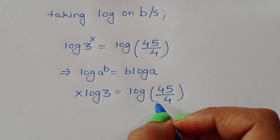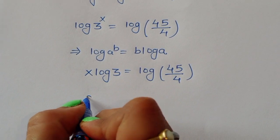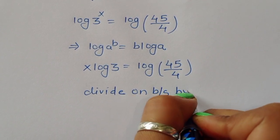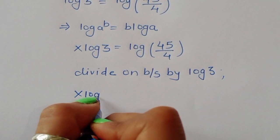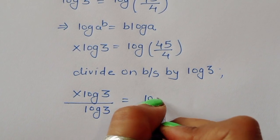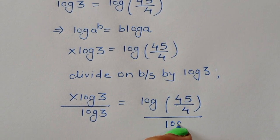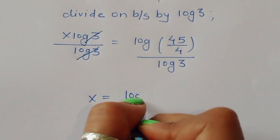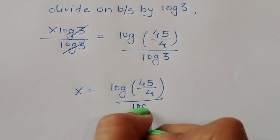Now x·log(3) equals log(45/4). To isolate x, we divide both sides by log(3). The log(3) cancels on the left, giving us x equals log(45/4) divided by log(3).